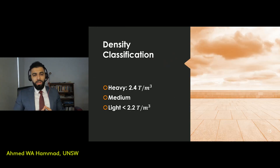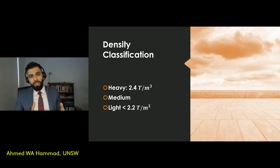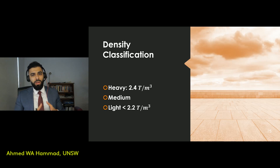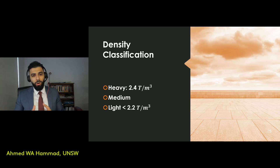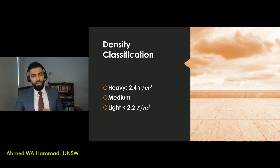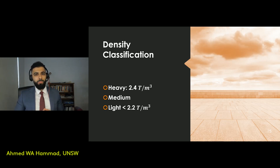Density is also another classification adopted for aggregates. Heavy aggregates have a density of about 2.4 or more tons per cubic meter. Light aggregates have a density less than 2.2 tons per cubic meter, and anything in between is classified as a medium aggregate.